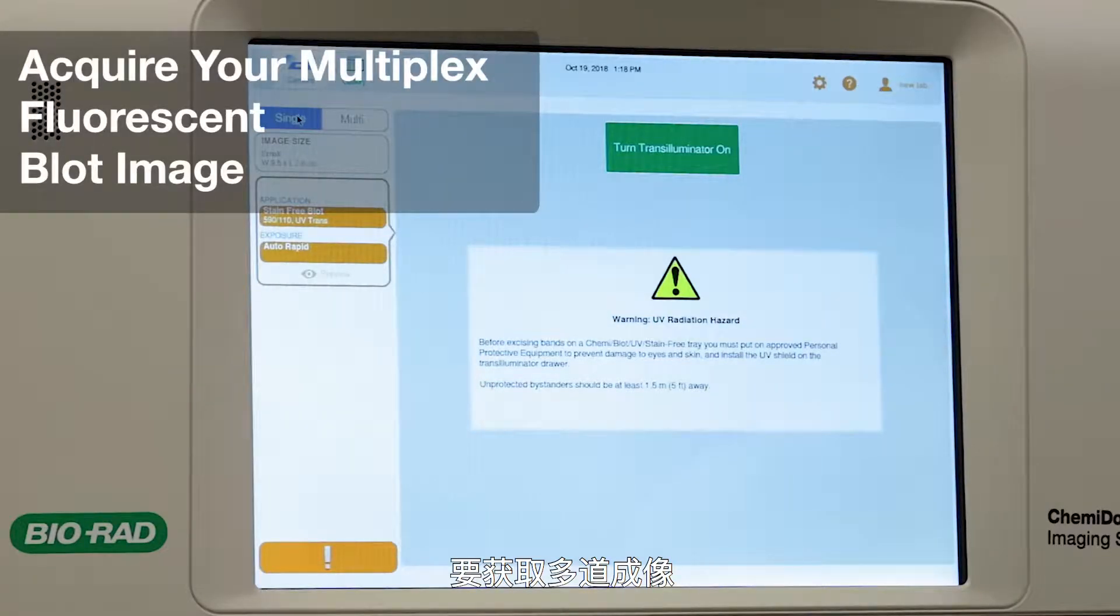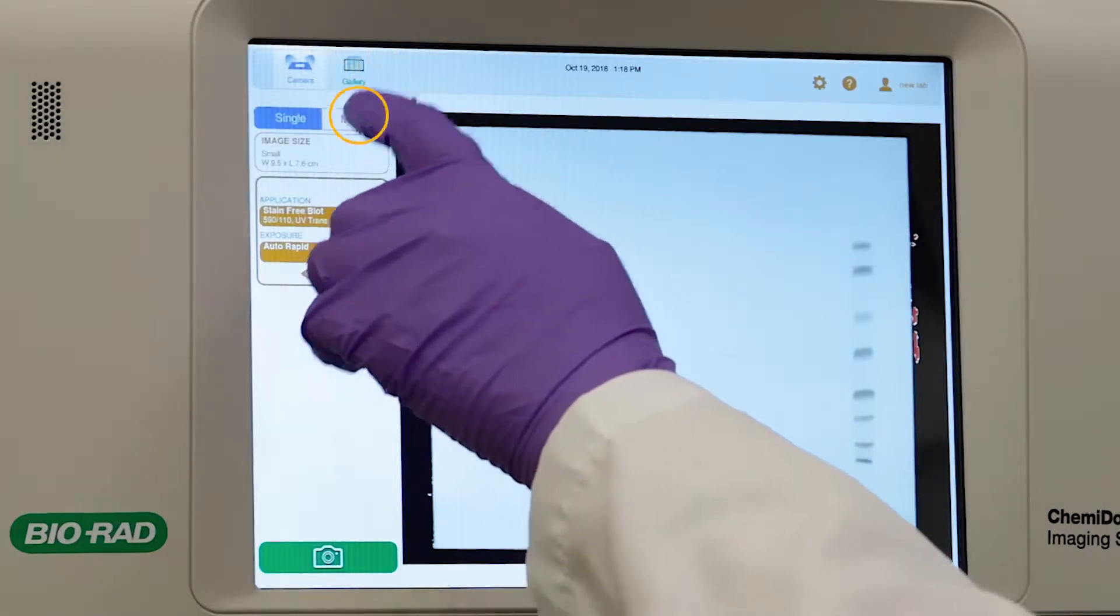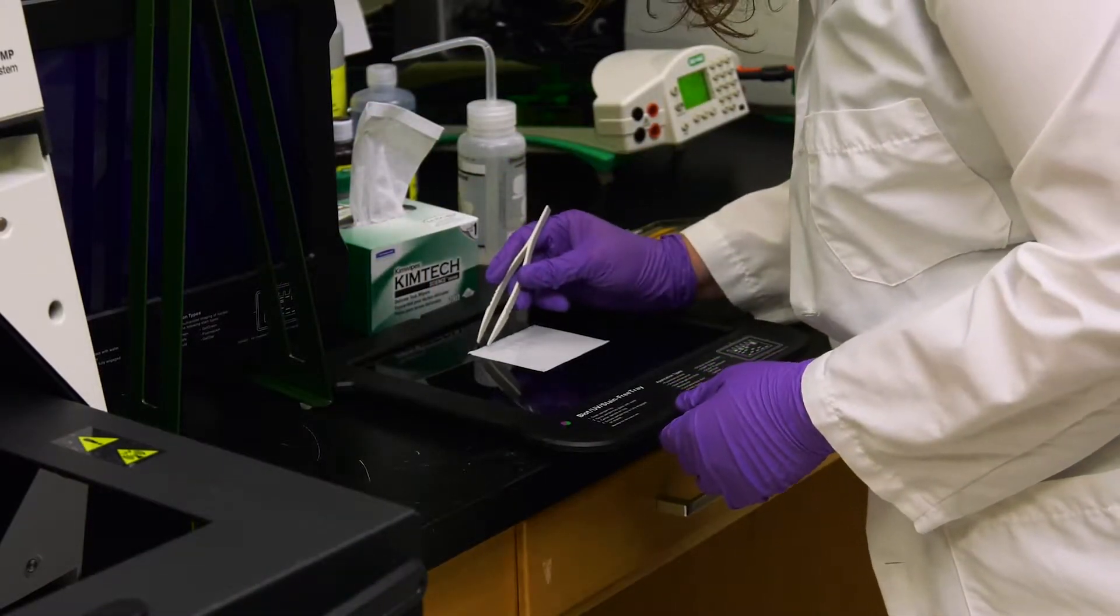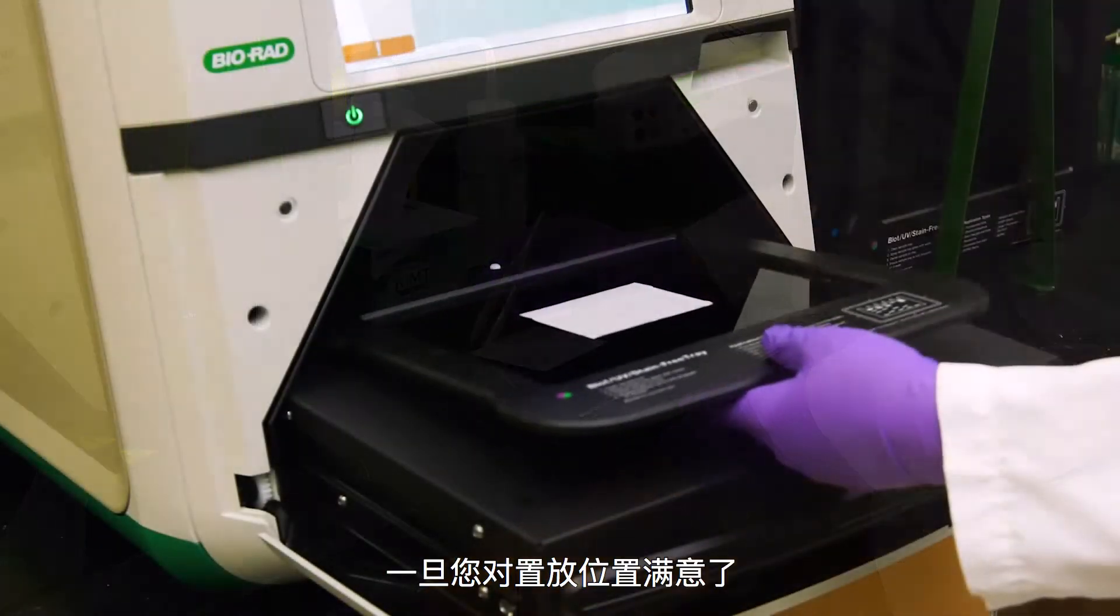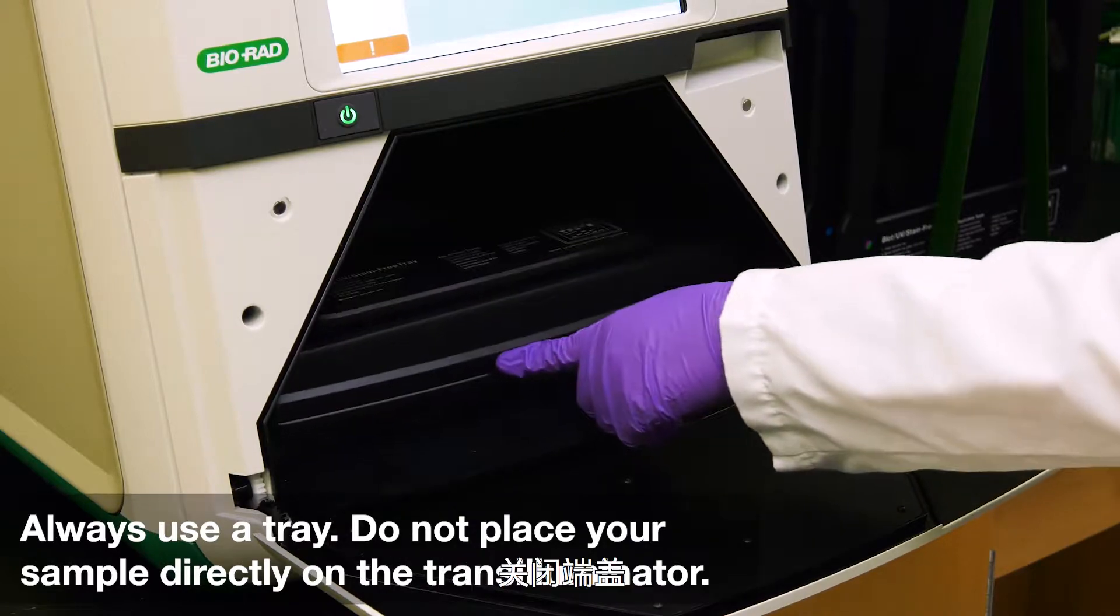To acquire multi-channel images, begin by tapping Multi. Center your membrane on the UV tray. Once you are satisfied with the position, push the transilluminator back in and close the drawer.